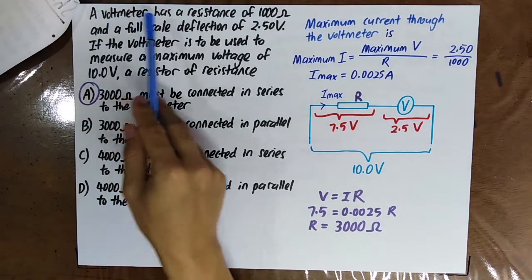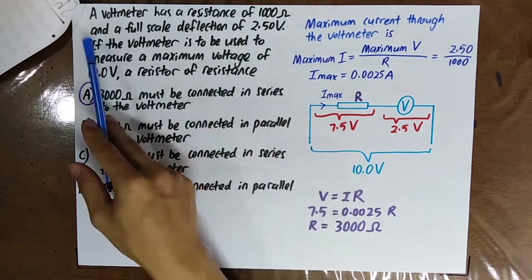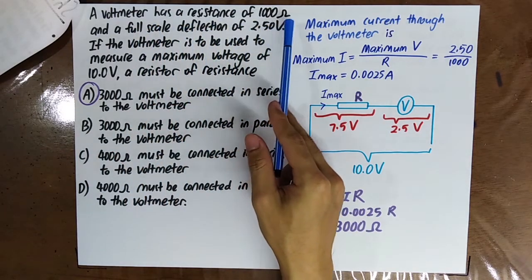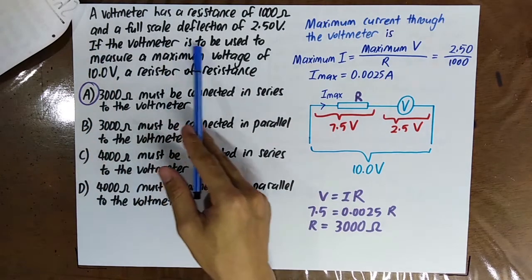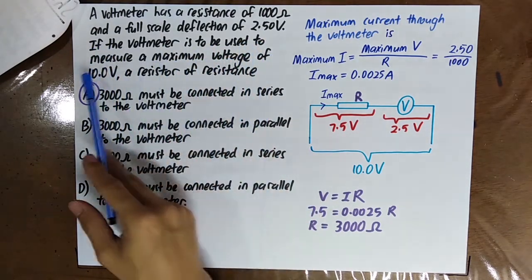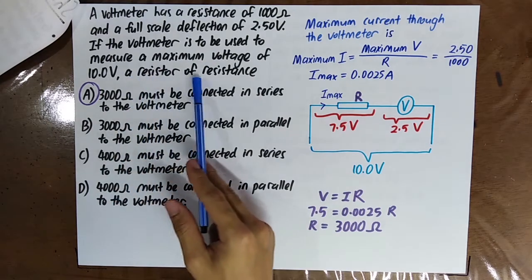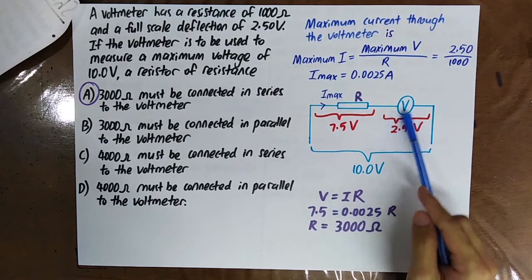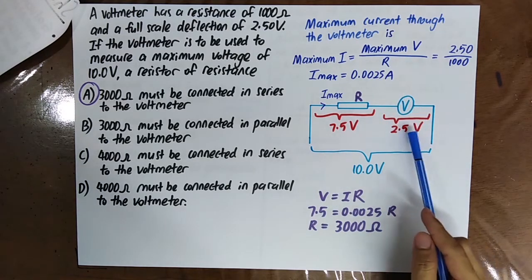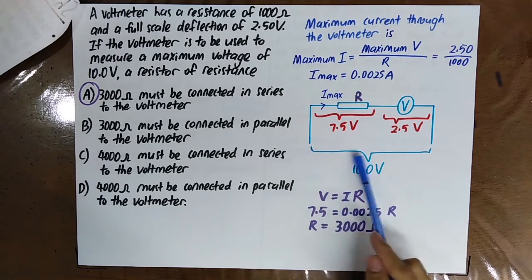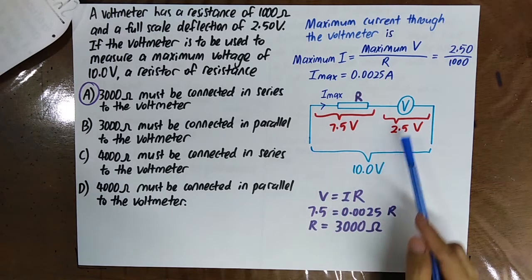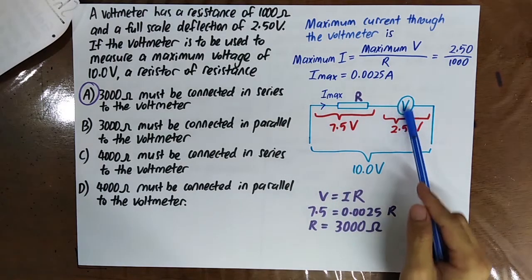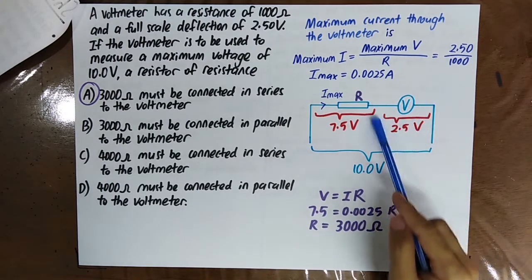A voltmeter has a resistance of 1000 ohm and a full-scale deflection (FSD) of 2.5 volt. If the voltmeter is to be used to measure a maximum voltage of 10 volt, a resistor of resistance... So now you know that the maximum potential difference across the voltmeter is 2.5 volt, and you want to measure 10 volt. So you have to connect a resistor in series with the voltmeter, and here the reading is 2.5 volt.